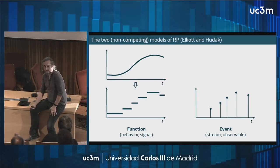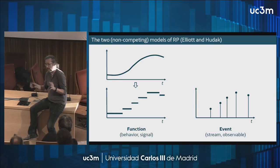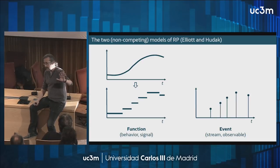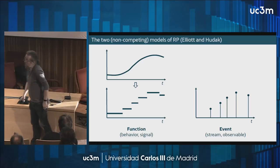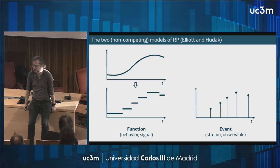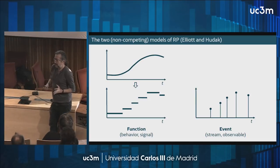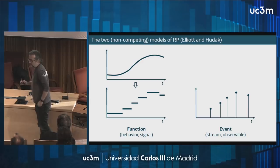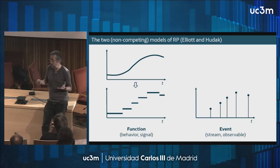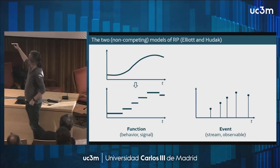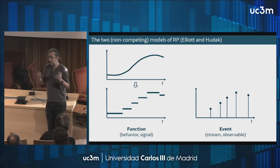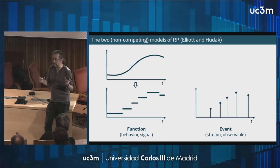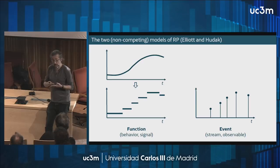Reactive programming is concerned with the reification of two concepts. The way Elliot and Hudak described it in their seminal paper, incoming data can be modeled as a function of time — a stable value that changes from time to time — or in a discretized way as events, which are values emitted at particular points in time. These two models are not competing; they can be used in different scenarios or collaboratively. In the literature, functions may be called behaviors or signals, and events may be named streams or observables. For this presentation we'll stick to functions and events.